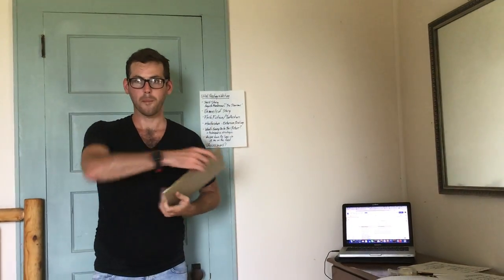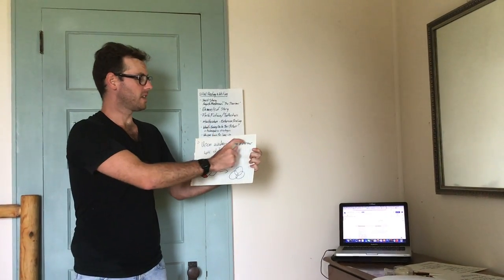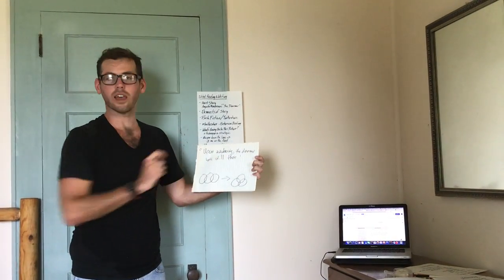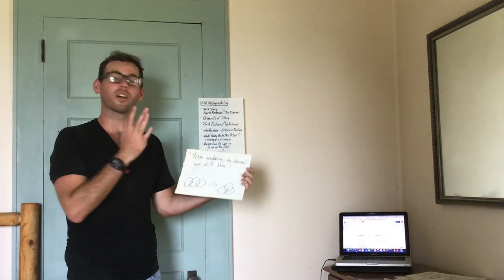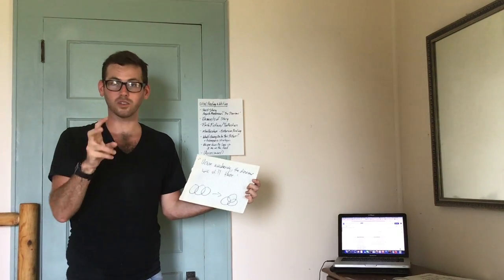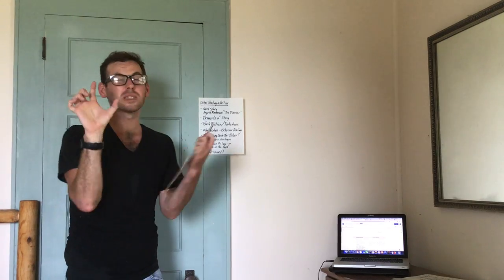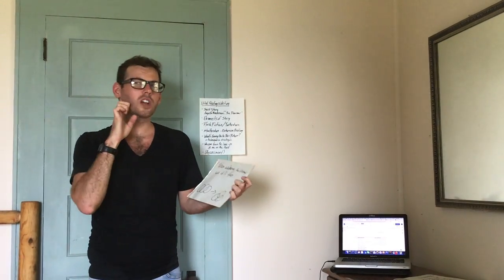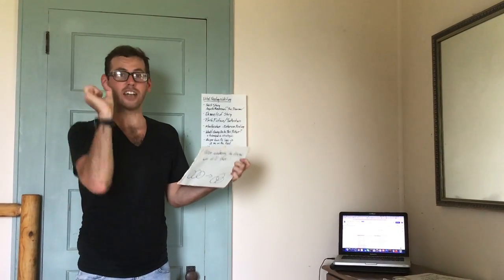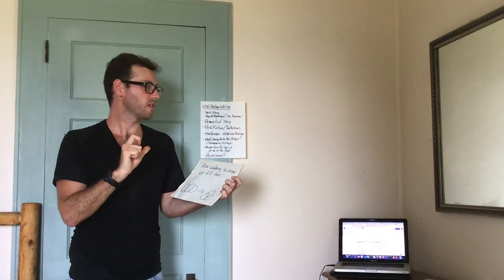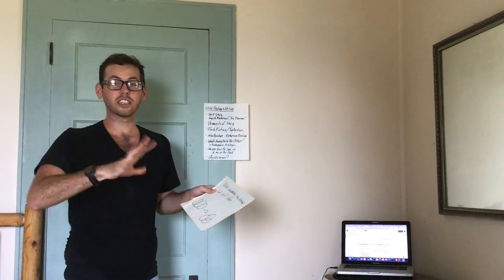So: 'Upon awakening, the dinosaur was still there.' That's it — that's the story. This is a story called 'The Dinosaur' by Augusto Monterroso. This is an example of a specific genre of literature called flash fiction, or microfiction.